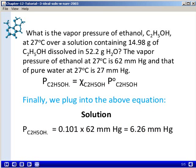Finally, we can plug these values into the equation above. To find the vapor pressure of the ethanol, we would take the mole fraction of ethanol, 0.101, multiplied by the vapor pressure of pure ethanol at 27 degrees Celsius, and that value was 62 millimeters of mercury. When we multiply these numbers together, we find that the vapor pressure of the ethanol is 6.26 millimeters of mercury.